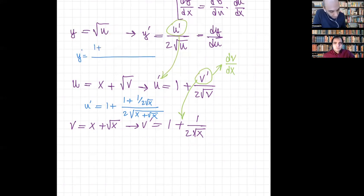I think, yeah, on the numerator I have u prime, which is down here: one plus 1 plus 1 over 2 times the square root of x divided by 2 times the square root of x plus the square root of x. And then the denominator, I have 2 times the square root of u, which is x plus the square root of x plus the square root of x. That's correct.